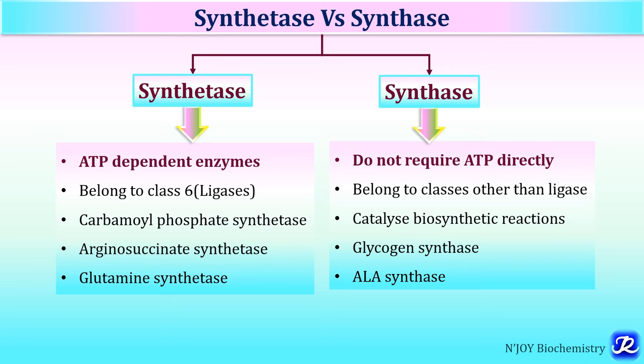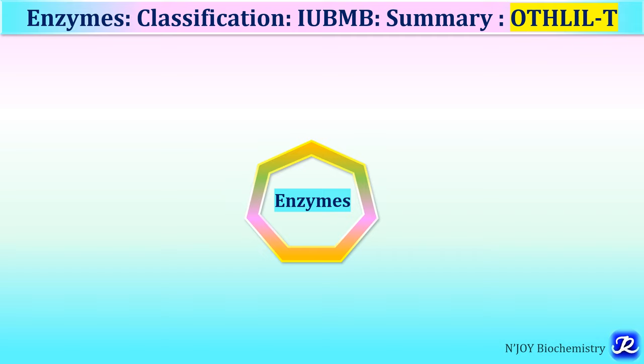In summary, enzymes are specialized proteins produced by living cells that catalyze biological reactions, converting substrate into product. They are highly specific, heat labile, water soluble, and accelerate reactions without being consumed. Enzymes are classified by IUBMB, each with an EC number; there are 7 major classes remembered by the mnemonic 'Othlyle T'.